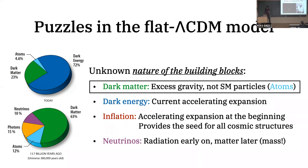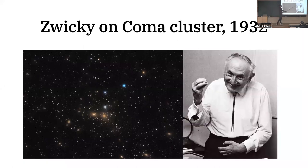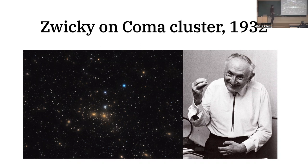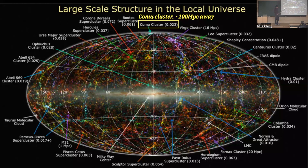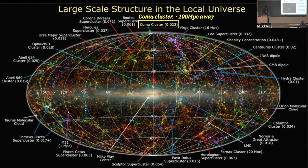The story begins in 1932 when Fritz Zwicky looked at the Coma Cluster. This object is a galaxy cluster — from one end to the other it's about 60 megaparsecs, and the cluster itself is about 100 megaparsecs away from us. This is where the cluster sits in the distribution of galaxies measured by the 2MASS galaxy survey, using galactic coordinates where the galactic plane is on the equator. The Coma Cluster is right at the north in this coordinate system.